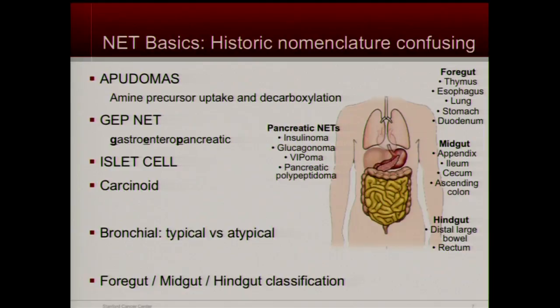A little bit more on nomenclature. The nomenclature has really gotten in the way of understanding this disease. In the past, these were known as apudomas, GEP-NETs, islet cell tumors. The carcinoids that arise in the pancreas were once called islet cell tumors. Carcinoid itself is a name we in the scientific world try not to use because it means one thing to some people and another thing to others. The term we use is well-differentiated neuroendocrine tumors. But if they arise in the lung, they have a different classification — either atypical or typical carcinoids. The older classification was based on embryology: foregut, midgut, and hindgut — classifications we try not to use anymore.